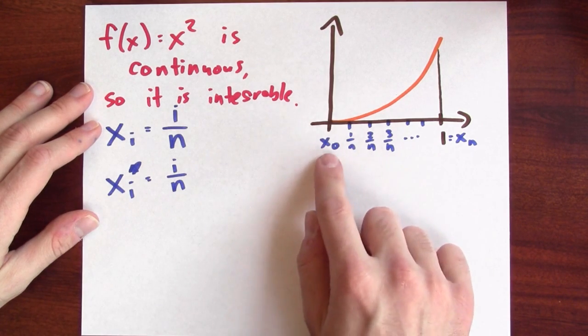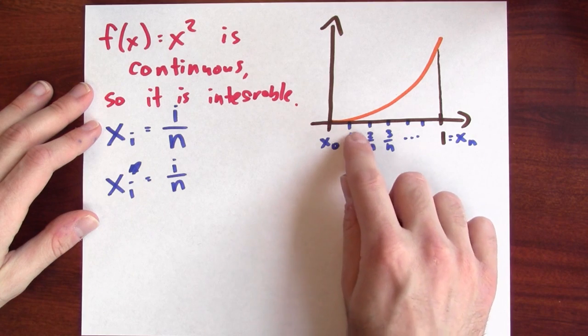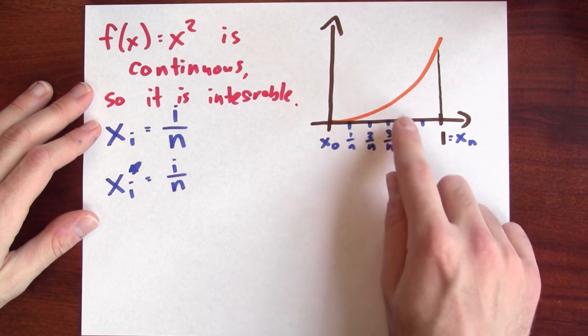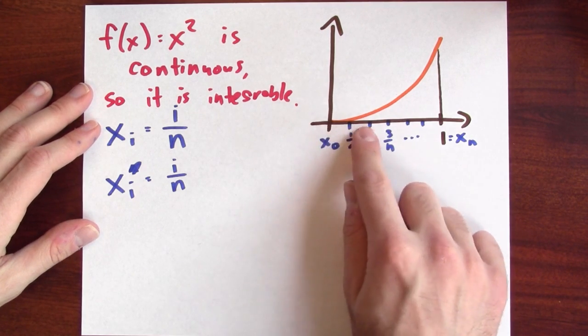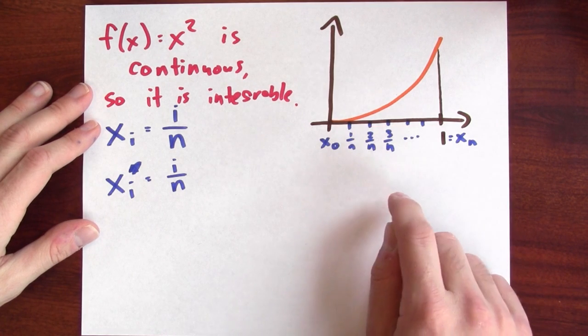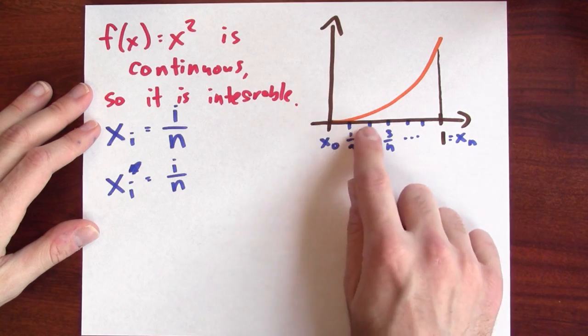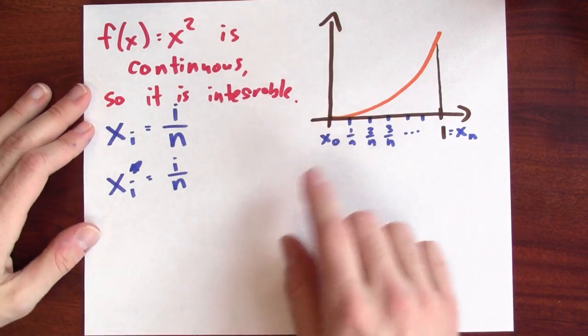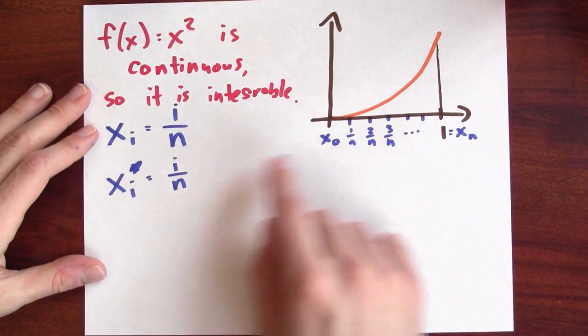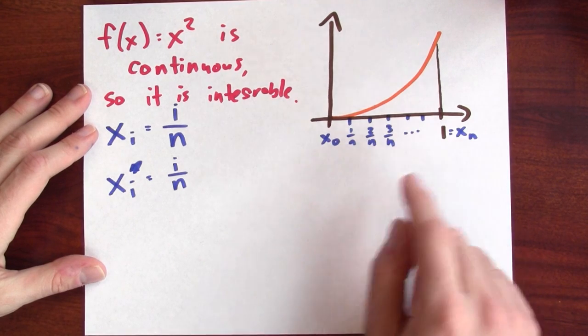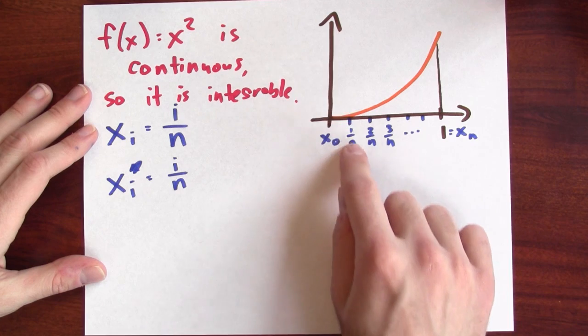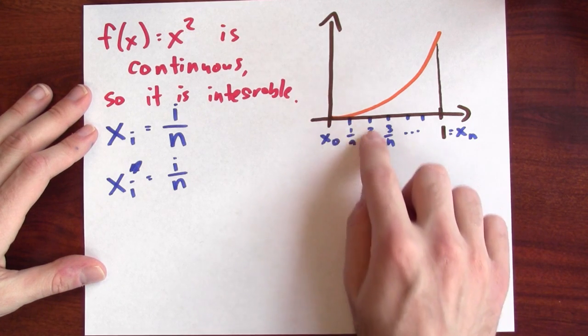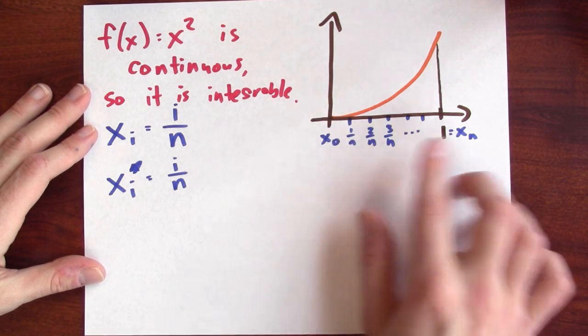My cut points in between where I'm cutting up to partition are at i over n. So the first one here, or the one after the zeroth one anyway, is 1 over n. The next one is 2 over n. The next one is 3 over n. And each of those subintervals has the same width, 1 over n. I also have to choose points to sample the function at, and I'm just going to choose the right-hand endpoint here.